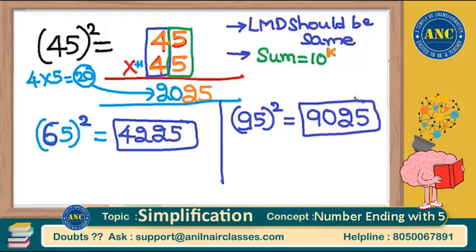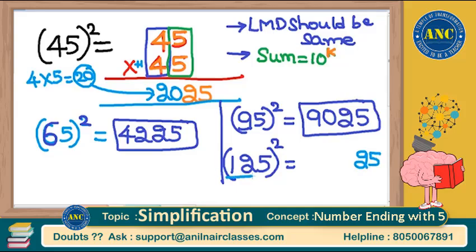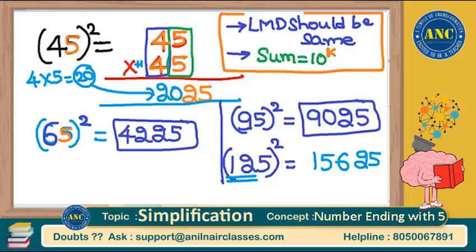Now take a 3-digit number: 125 square. The approach remains the same. 5 square is 25; here it is 12, and 12 into next number — 12 into 13 is 156. So 125 square is 15625. You might think this logic is only applicable to numbers ending with 5 — but that is not the only case. These two conditions are what need to be satisfied.